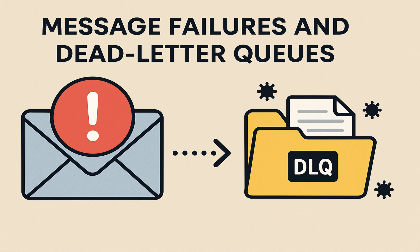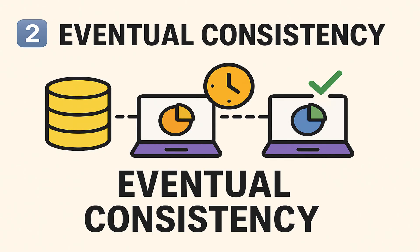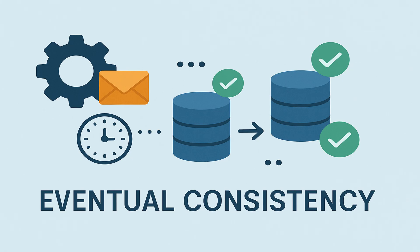This way you never lose important data and can keep your system healthy. Since services are working independently and not waiting for immediate responses, your data might not be updated everywhere at exactly the same time. Your data will become consistent after some time — this is called eventual consistency. The system will become consistent over time, not instantly, and some parts may be slightly out of sync for a short period but will catch up soon.